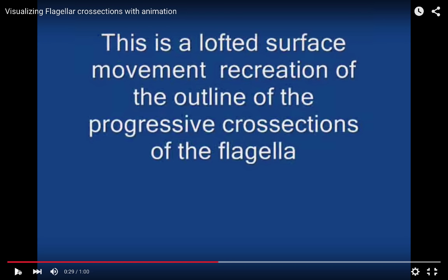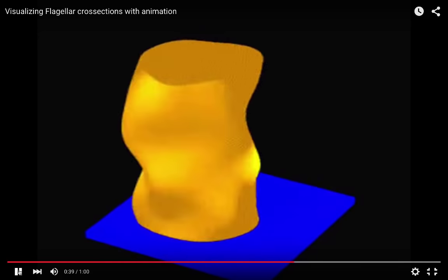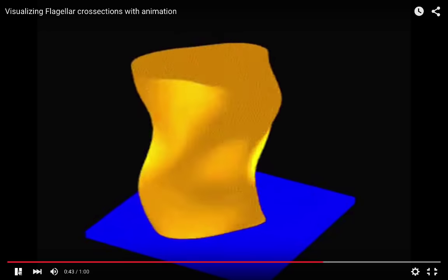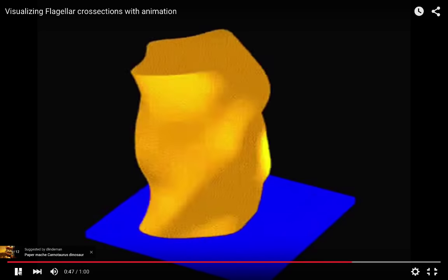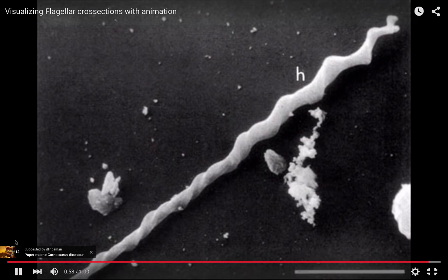That was put together into a different model, and the second part of this movie will show the idea of how the entire microtubule structure moves in the flagellum. Notice how the entire flagellum moves in an undulatory fashion. That gives the idea of how sperm or the tail of the flagellum of a protist moves. You can see in the last part of the movie how that movement resembles the undulatory move of a starling sperm, also captured by an SEM image.